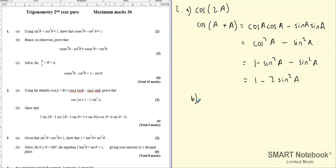Now part B is saying show that the left hand side is identical to the right hand side. Now notice that we have worked out cos2A in part A. And we've got cos2θ in part B.